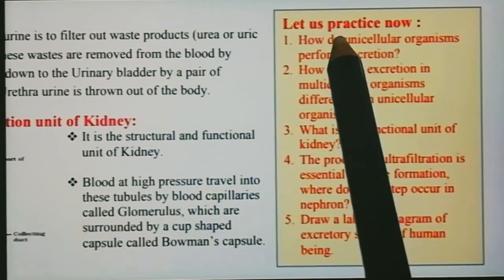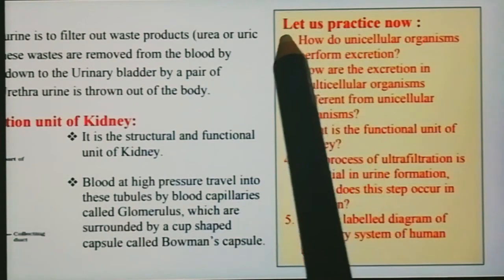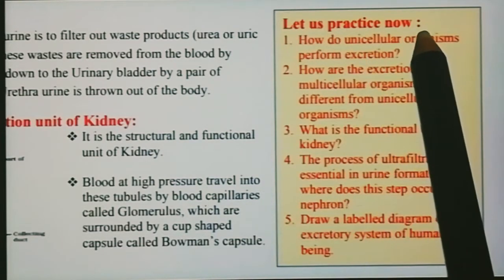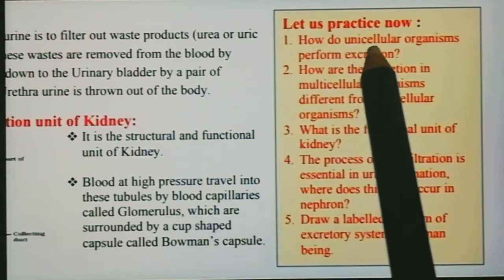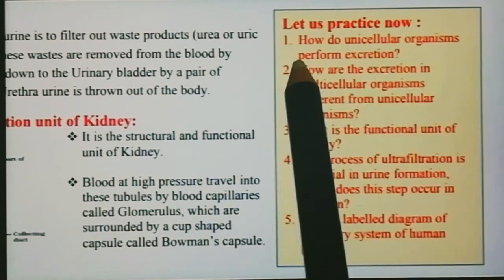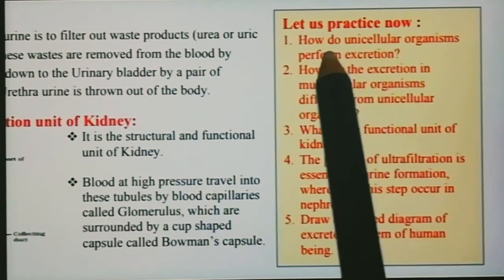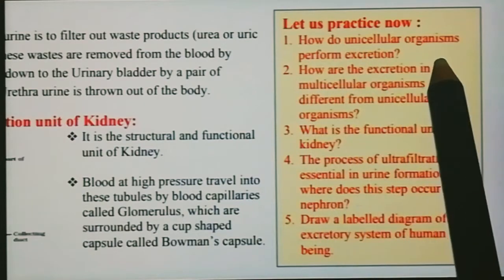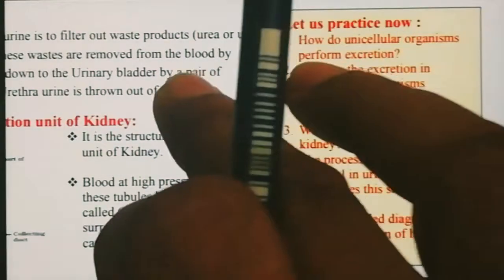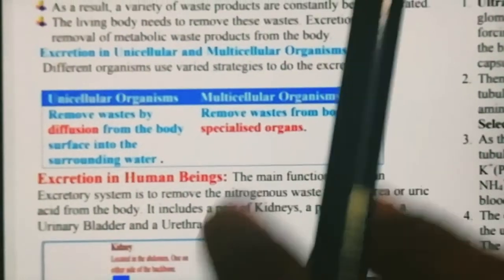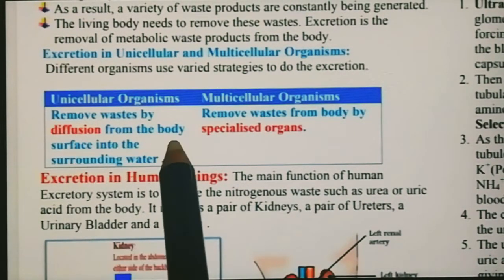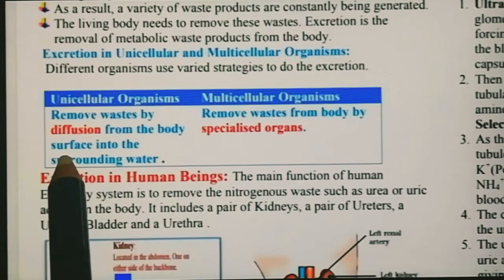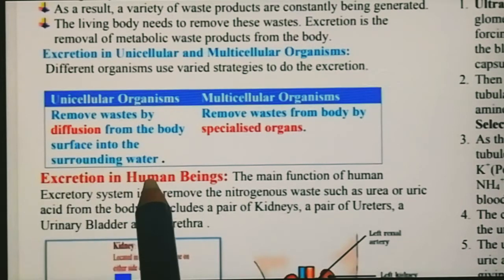Now come to the question answer. Let's practice. First question: How do unicellular organisms perform excretion? Unicellular organisms excretion कैसे करते हैं? यह आपको starting में बताया गया था। Unicellular organisms remove waste by diffusion from the body surface into the surrounding water.